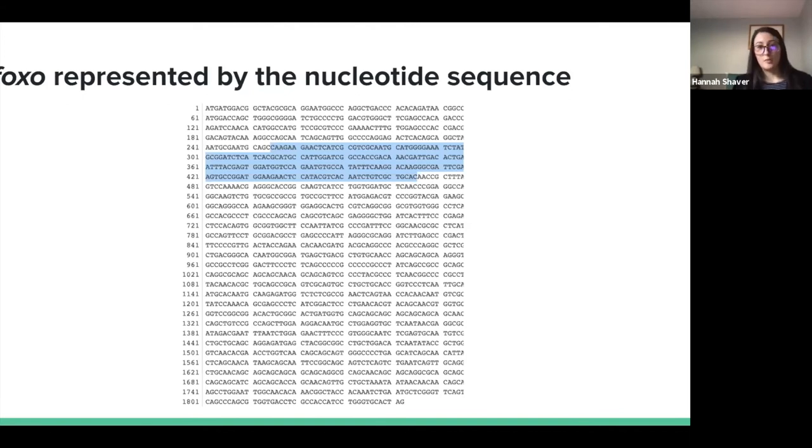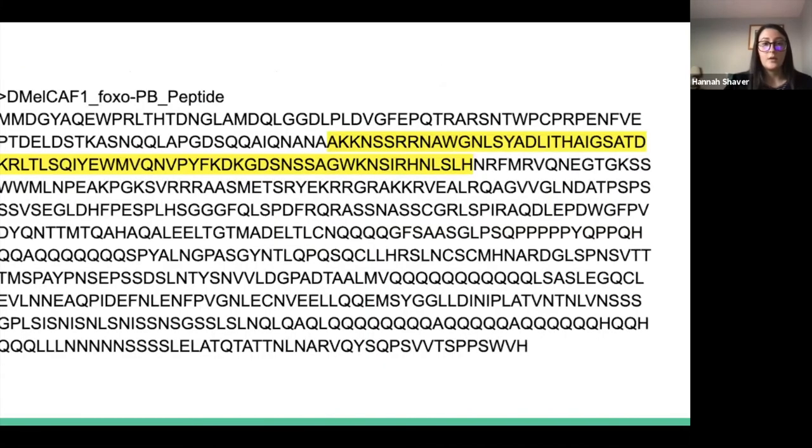Now we have the peptide sequence. The forkhead domain is highlighted from 85 to 125, like we found in persimilis because it's comparable to D. melanogaster. We use both forms of the sequence to distinguish the synonymous versus non-synonymous changes occurring in the sequence throughout evolution across Drosophila species.